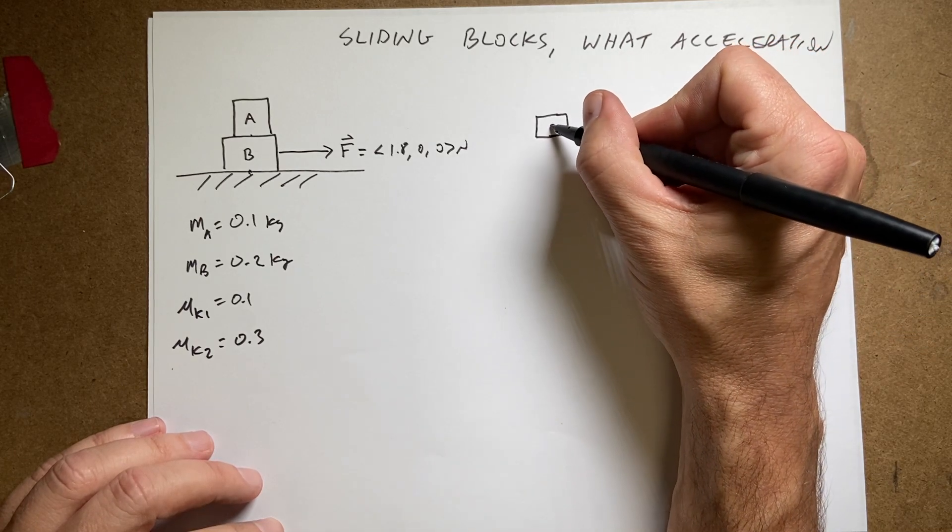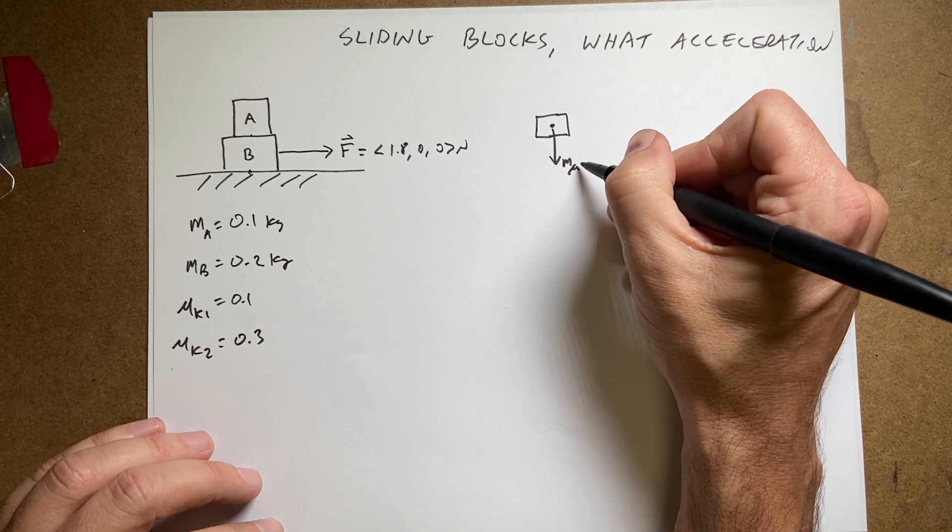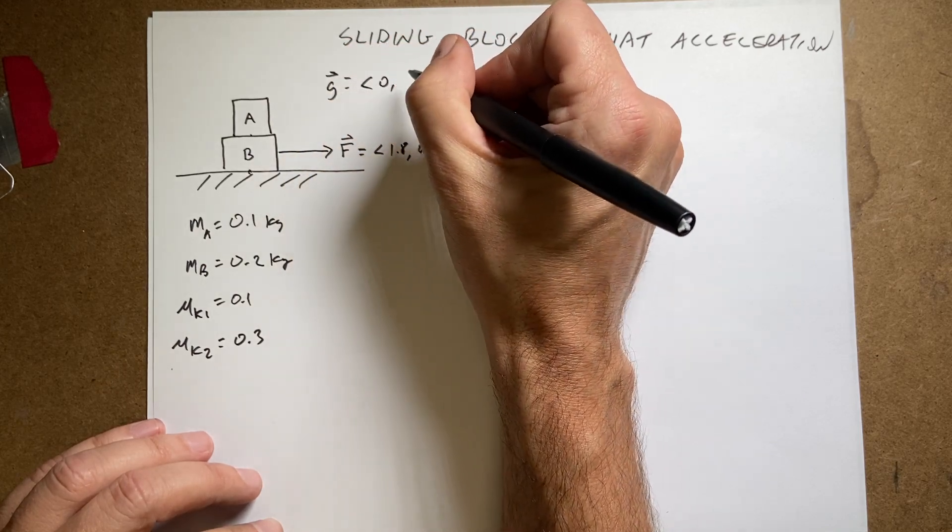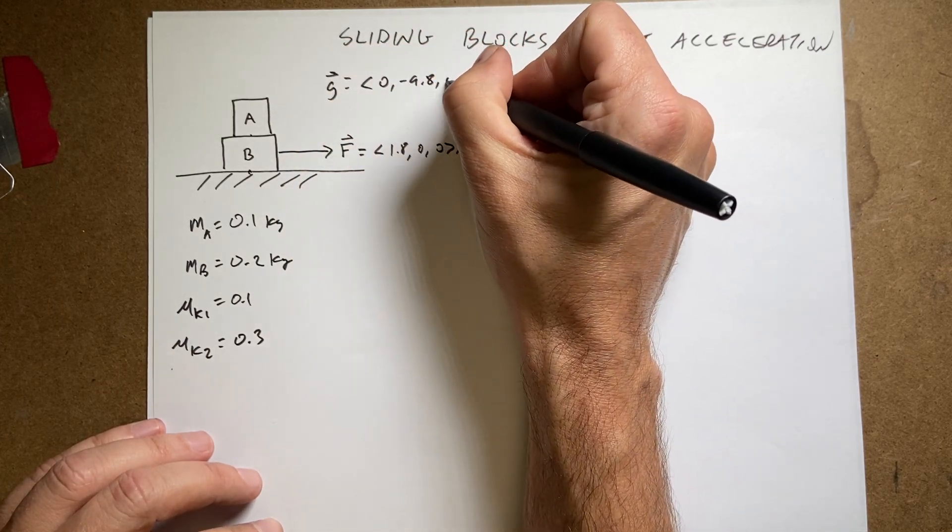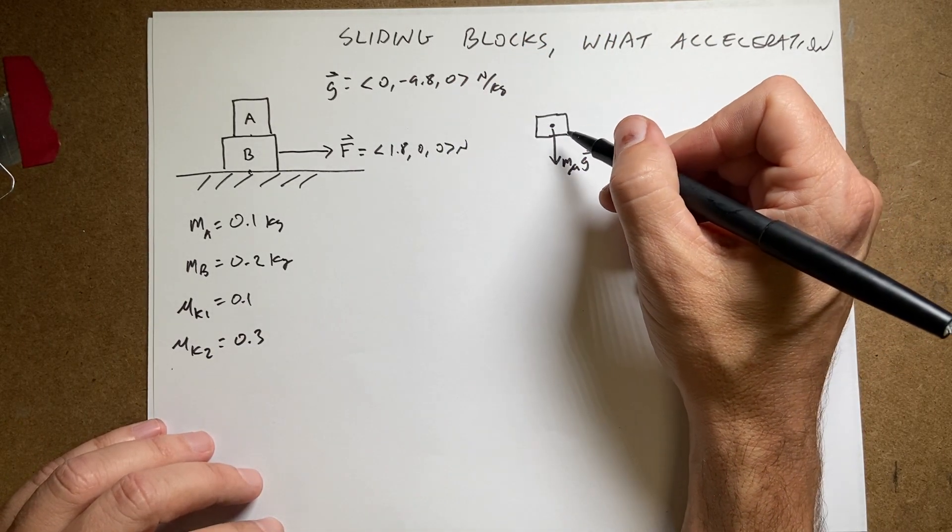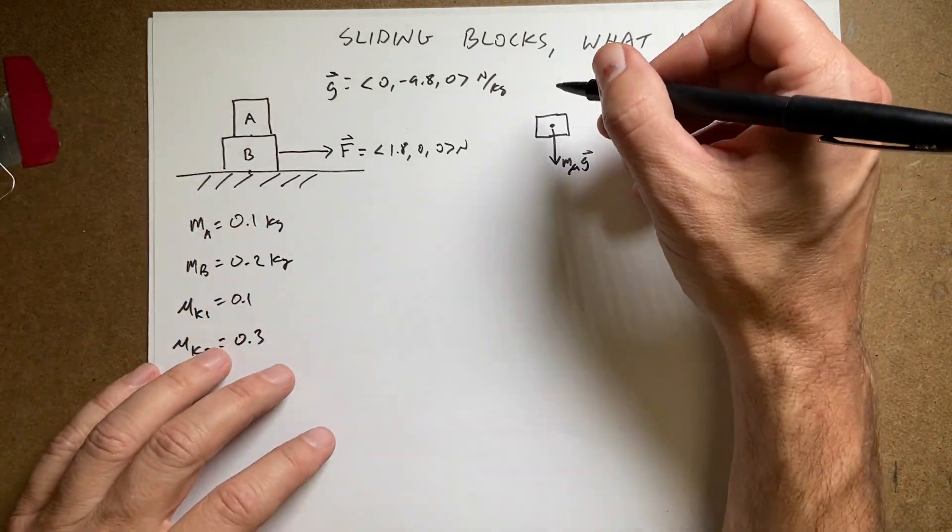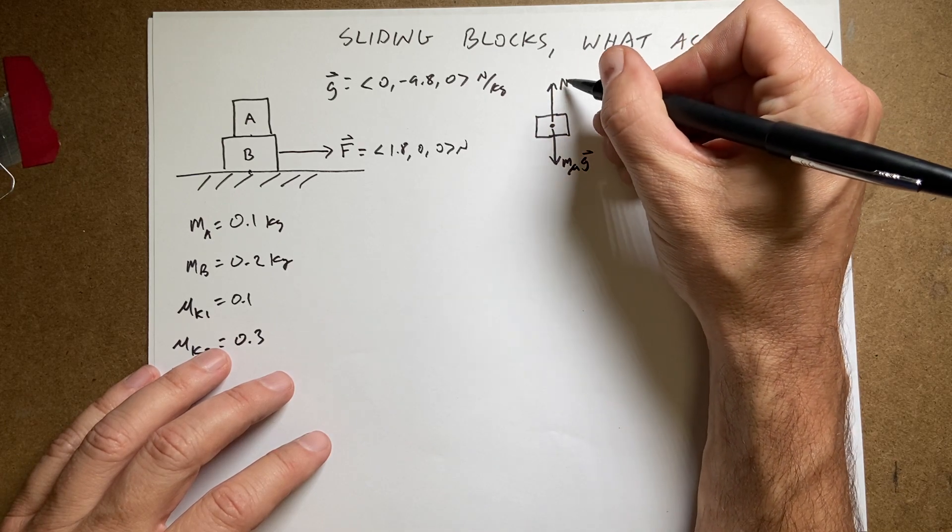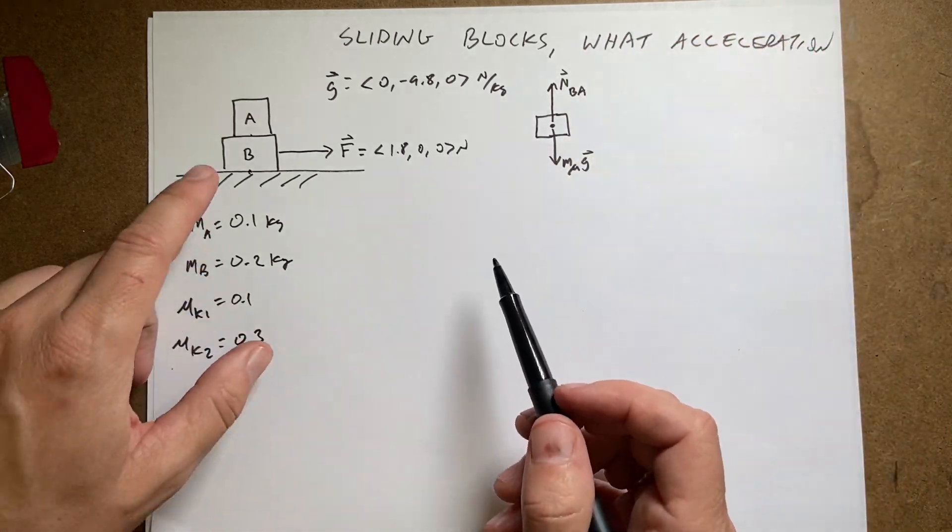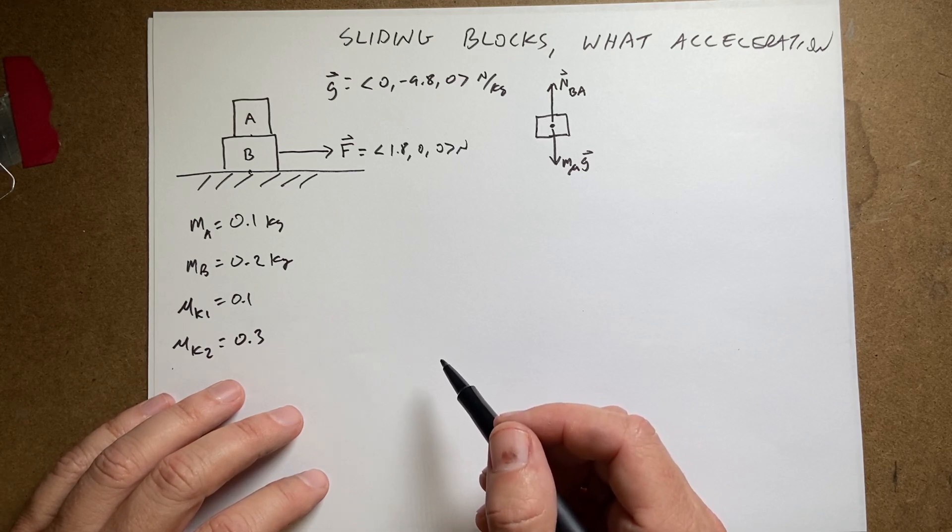Well, we have the downward gravitational force, M A G. And remember, G is the vector, it's the gravitational field, 0, negative 9.8, 0 newtons per kilogram. What else is on there? Well, I have block B pushes up, right, and that's a normal force. So I'm going to call this N B A. It's the normal force of B pushing up on A. What else is acting on that?